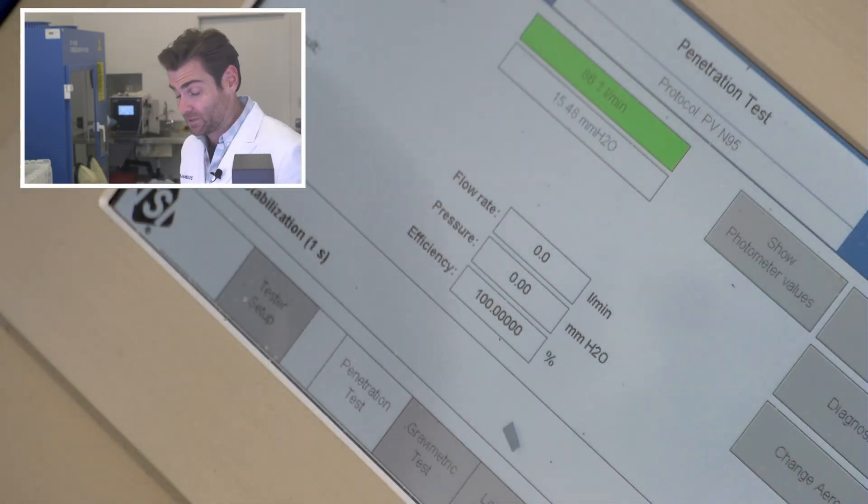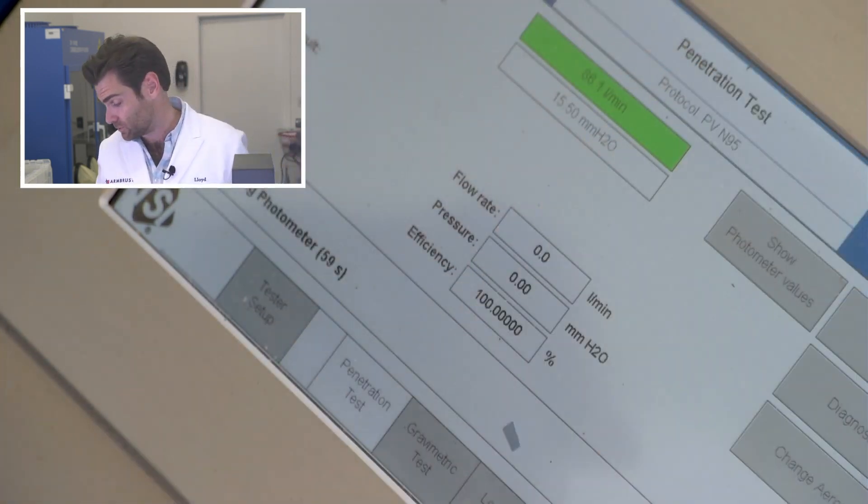Alright, this is a PFE machine—particulate filtration efficiency machine. We are doing the N95 test on this 3M FFP3. It is model number 9330 Plus, made in the UK. Hey, just across the pond—is that what we say? Across the pond.